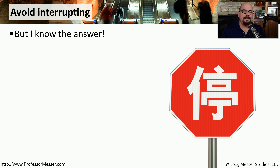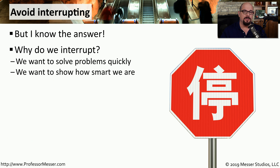One of the challenges we face when listening to someone explain their problem is that you can often determine what the issue is very early on in the conversation. From a human nature perspective, we want to jump in and interrupt the person to tell them the answer so we can move on. But this type of interrupting can be very abrupt, especially when someone is trying to explain all of the problems they have with a particular situation, and interrupting can make them feel you don't really want to help them.